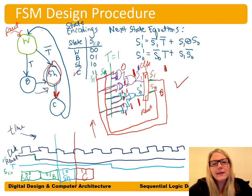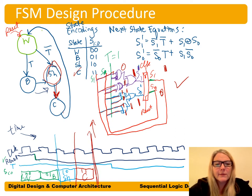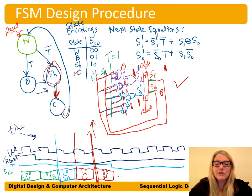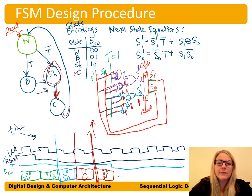To calculate this output, we write what's called an output table. The output table has the current state on the left and the output (or outputs) on the right — in this case the happy signal H. So for each state W, B, shower, and class, H should be 0, 0, 0, and 1 respectively.